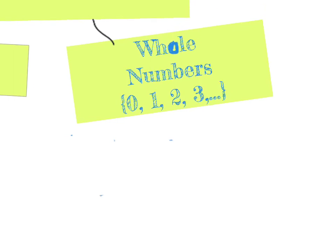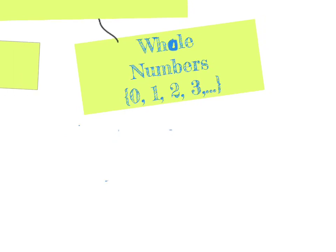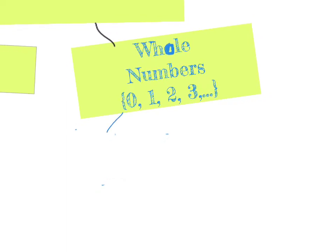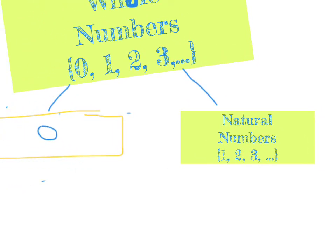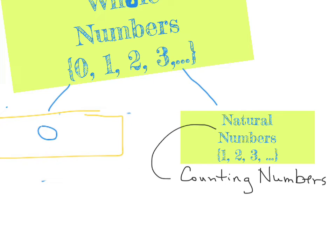Zooming in further, inside of the whole numbers we find zero — put it as its own group. And then in our other group we have what we call the natural numbers. Notice that the natural numbers do not have zero in this set. They actually just contain the numbers that we use to count, so we would also call natural numbers counting numbers. If you count the fingers on your hand, you start with one, two, three, four, et cetera.